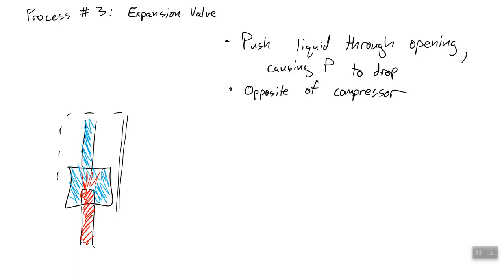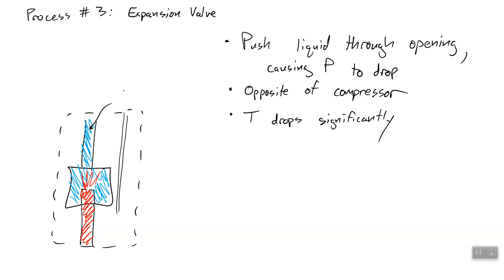The expansion valve is kind of the opposite of the compressor. In the Rankine cycle, the equivalent was a turbine where you extracted work. In theory, you could put a turbine here, but since refrigeration cycles are generally very small — like for a refrigerator or air conditioner — it's not worth it. Also, this is going from a saturated liquid to a mixture of vapor and liquid, and there's really no turbine suited for that mixture. So we just waste that energy by pushing the liquid through a small hole, which causes the temperature to drop significantly.